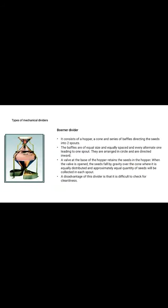The Bodner divider consists of a hopper, cone, and a series of baffles directing the seeds into two spots. The baffles are of equal size and equal spacing, with every alternate one leading to one spot, arranged in a circle and directed inward. A wall at the base of the hopper retains the seeds. When the wall is opened, the seeds fall by gravity over the cone, where they are equally distributed and approximately equal quantities of seeds are collected in each spot. The disadvantage of this divider is that it is difficult to check for cleanliness.